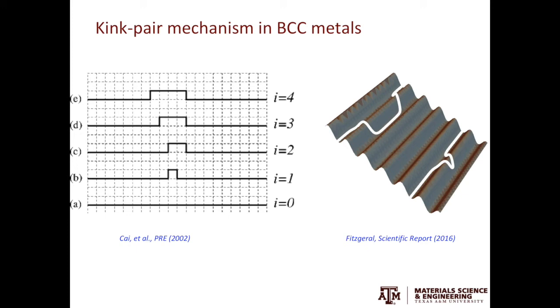In BCC metals, the edge component of the dislocation is more mobile, while the screw component is less mobile. This contrasts with FCC metals, where screw and edge components have very similar mobility.